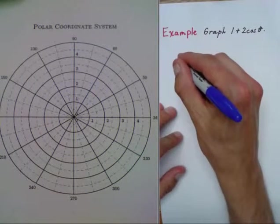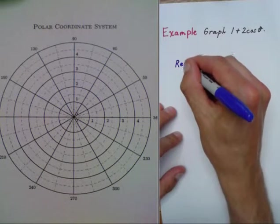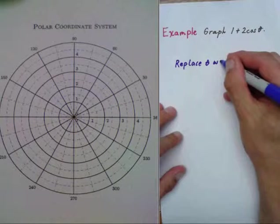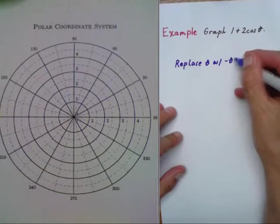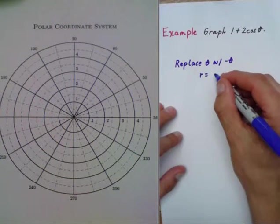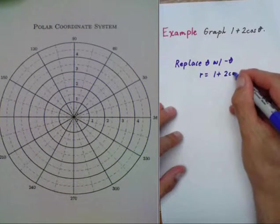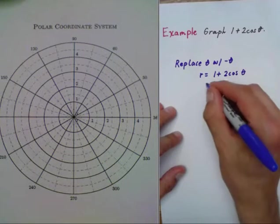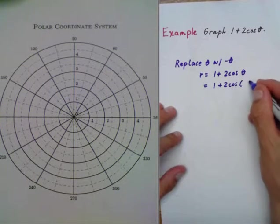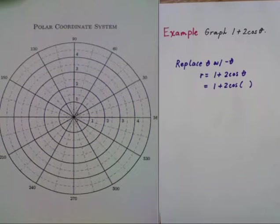We're going to replace theta with negative theta. That's how we test for the symmetry. Write your equation: r equals one plus two cosine theta. When you switch that, it becomes one plus two cosine of negative theta.